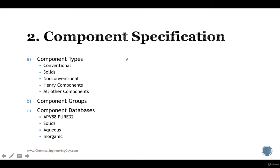First things we're going to cover after finishing with the introduction is component specification. As the name implies, we need to state the components that we will be using in the simulation or the physical property specification. We're going to cover the component types—the conventional ones that are the easiest to select. Those have already pre-existing data on the database. Some solids, non-conventional, Henry components, and all other components which we can select.